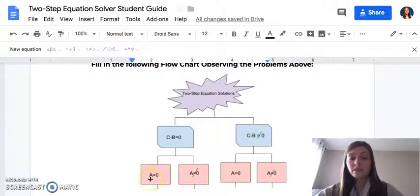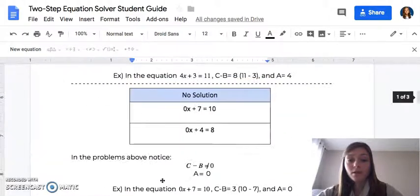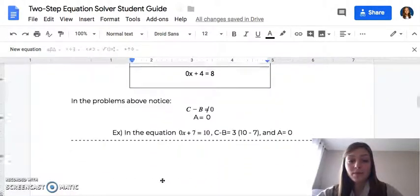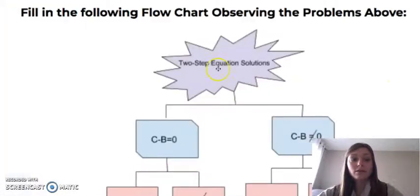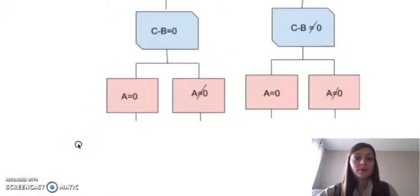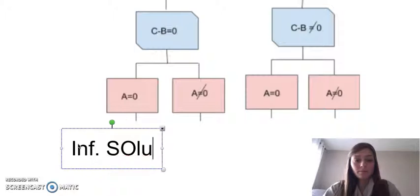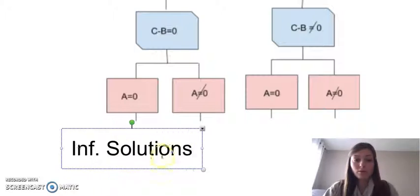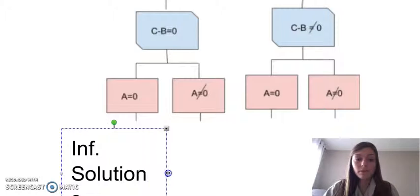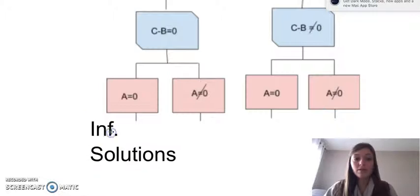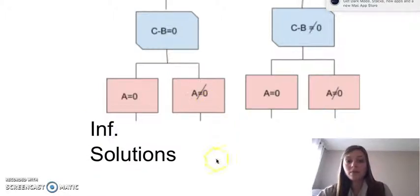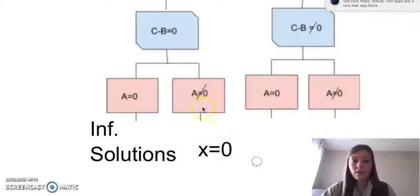Now, if we stick on the left-hand side of this chart here, when C minus B equaled zero, and we had A equal to zero as well, we were looking at a situation of here, infinite solutions. So you can have students fill in this flow chart together. Infinite solutions would lead to this branch right here. Okay, and then if we follow over, continuing to follow our patterns, looking at our table here, we'll find when C minus B equals zero, and A does not equal zero, we have a situation of X equals zero.